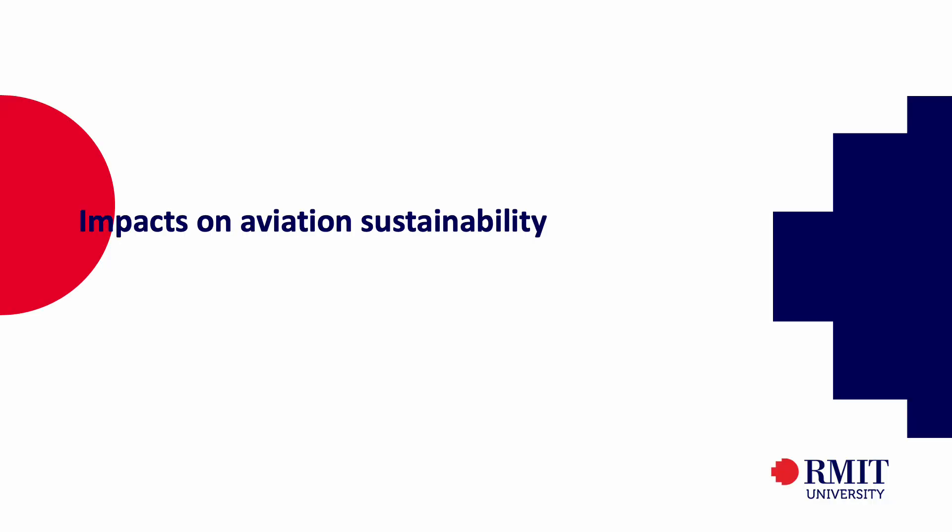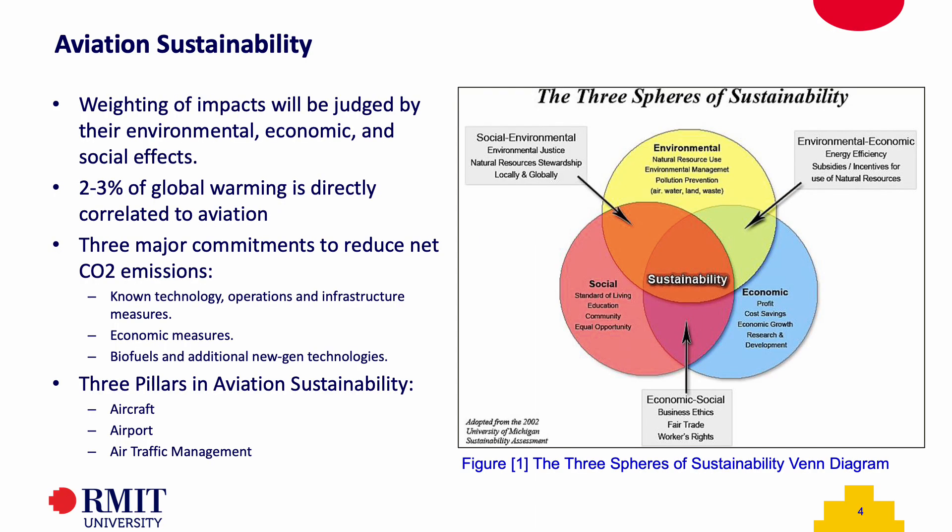Next, we have the impacts on aviation sustainability. With how the world is sitting at the moment, 2-3% of global warming is directly the cause of aviation. Sustainable aviation separates itself into three main categories: environmental, economic, and social. The weighting of the impacts is judged within these categories.